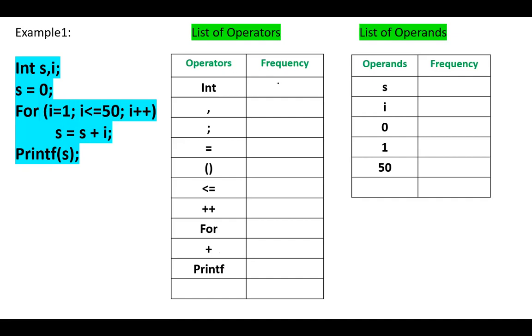The count of int is 1. The count of comma, we have only one comma. The count of semicolon, 1, 2, 3, 4, 5, 6. The count of equals, 1, 2, 3, we have two sets of parenthesis, less than or equal to, we have it only one time, plus plus, one time, for, one time, plus, one time, and the printf one time.